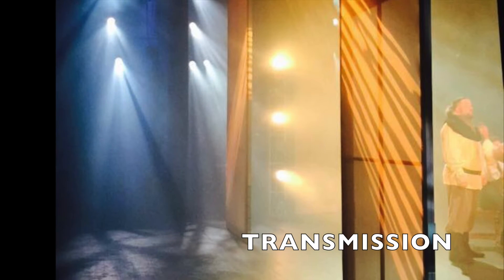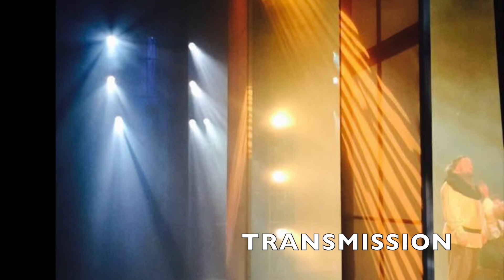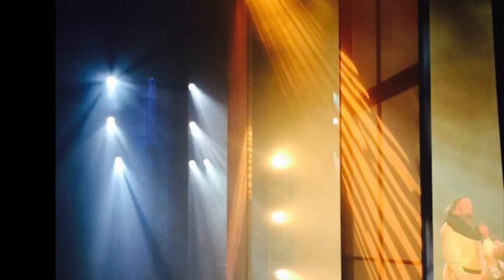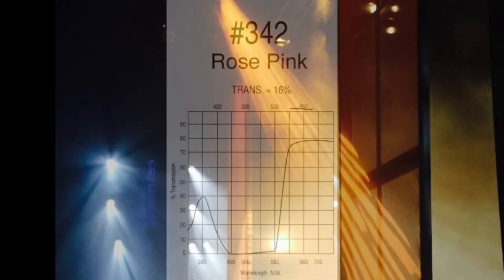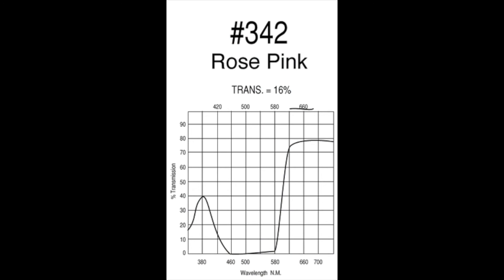Transmission is a term that we use to discuss the amount of light that can pass through a gel. The greater the amount of wavelengths that can pass through a gel, the closer the resulting color of light will be to white. Most gel manufacturers include some type of a chart that indicates the transmission of the gel. In this example, Roscoe number 342, also called rose pink, has a transmission factor of 16%. This indicates that only 16% of the visible spectrum would be transmitted through the gel. In other words, this gel would produce an incredibly saturated color.